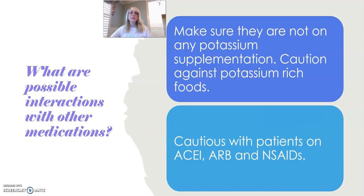What are possible interactions with other medications? Make sure patients are not on any potassium supplementation, and caution against potassium-rich foods or salt substitutes. We are also very cautious about giving aldosterone antagonists in addition to ACE inhibitors, ARBs, and non-steroidal anti-inflammatory agents — though we'll discuss how to closely monitor those patients who are on both.